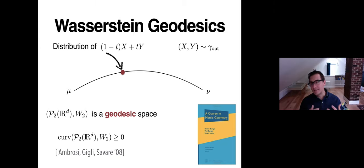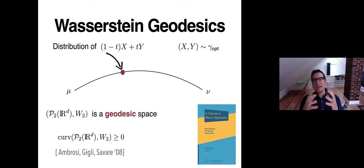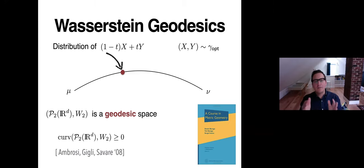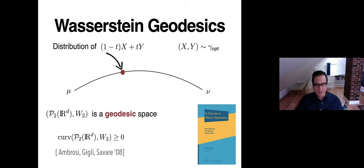Regarding curvature bounds, one typically gives bounds rather than pointwise values. We know that the space of probability distributions equipped with the Wasserstein-2 distance is non-negatively curved — think of it as resembling a sphere, though only as a lower bound, with flat parts and high-curvature kinks. Non-negative curvature is not hard to prove; it's based on the gluing lemma.